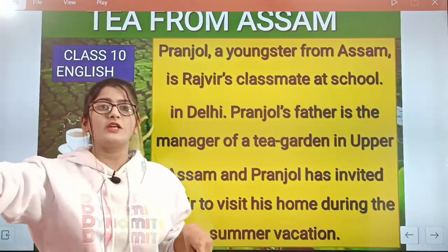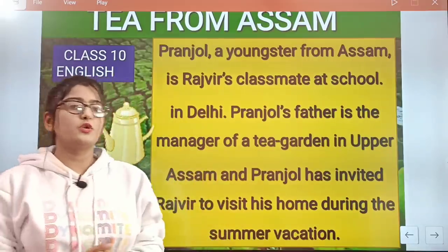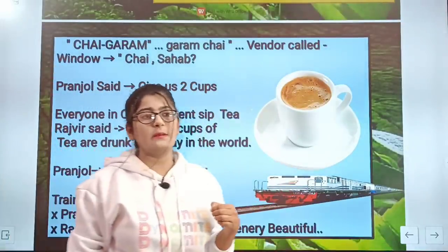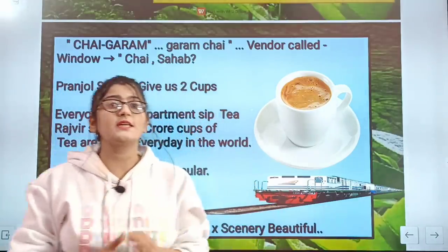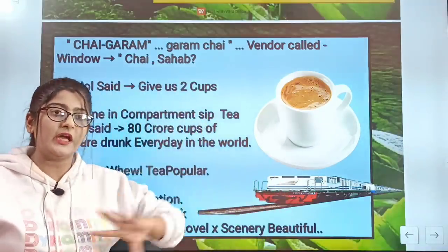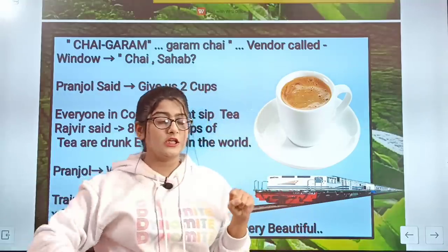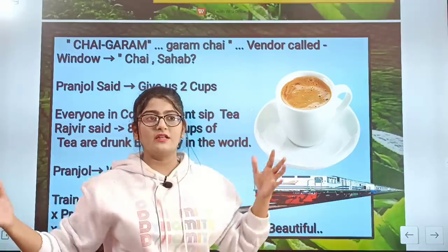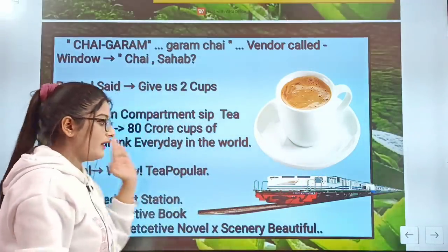This is Pranjal, and his friend's name is Rajveer. Pranjal is from Assam and his father is the tea garden manager. Both friends sit in the train and go to Assam. When they are sitting in the train, Rajveer is very excited to go. He has not seen so much greenery. In Assam there are so many tea gardens, and they are very excited to get there.